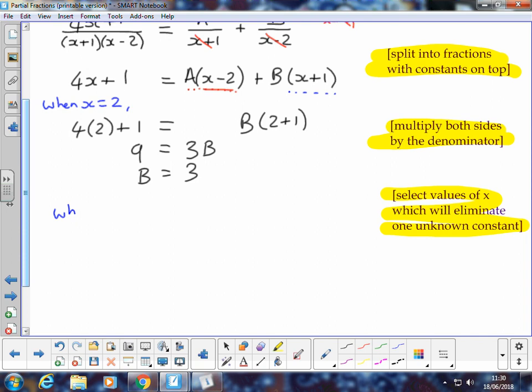So I'm going to select a second value for x, and that is negative 1. So on my left-hand side, I've got four lots of negative 1 plus 1 equals.